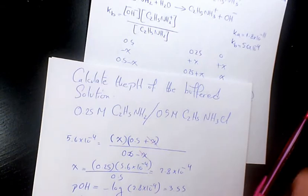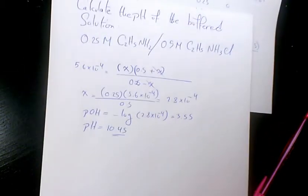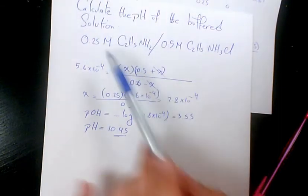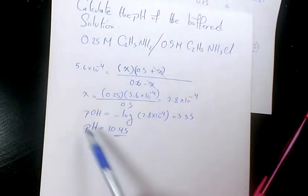So pH will be 14 minus 3.55 which is 10.45. As you see here.